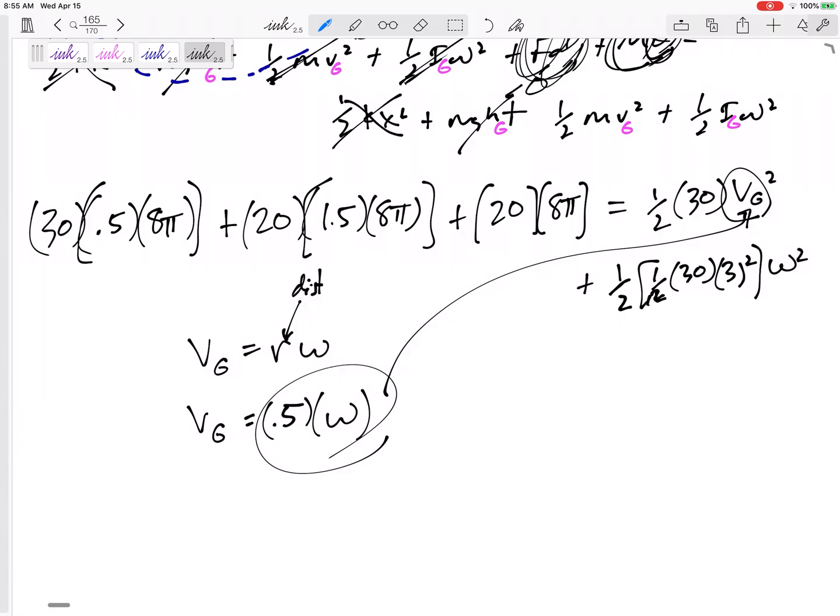And then solve for omega squared. Don't forget to take the square root. I've got an omega. See if you can do this math: 10.4 radians per second. I've got to define clockwise or counterclockwise.